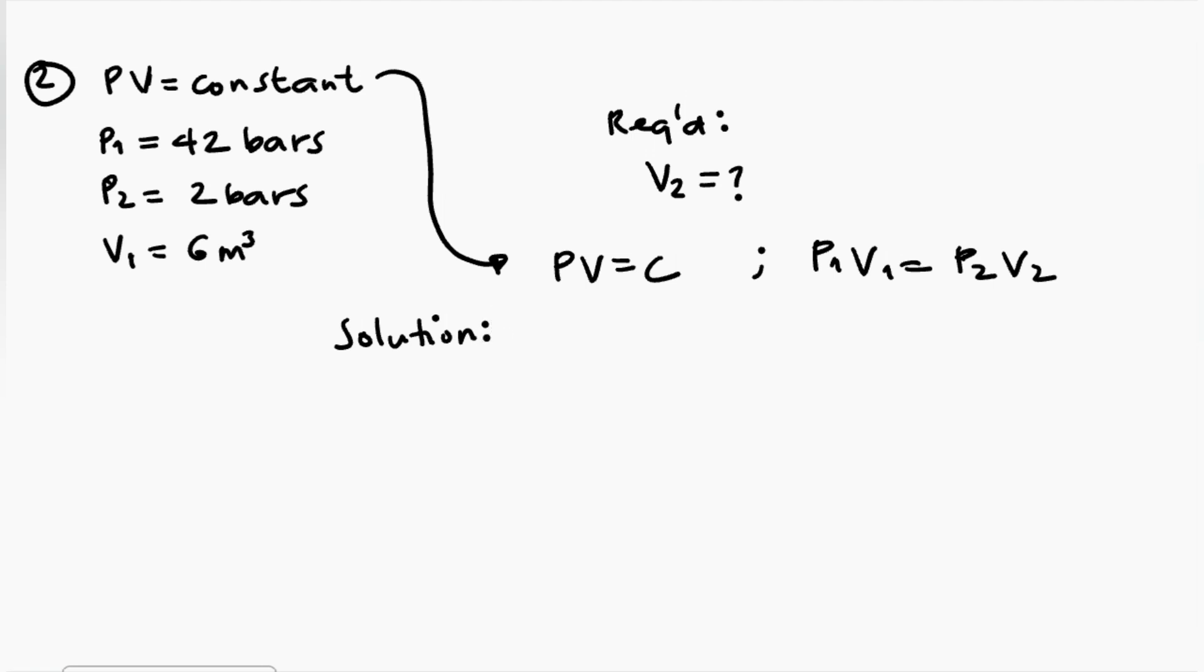First, we'll derive the final equation. From P1 V1 equals P2 V2, obtaining the equation for V sub 2, our final equation is P1 V1 over P2. That's the equation we'll use. What we'll do is substitute our given values. For V sub 2, the unit will be cubic meters, since V sub 1 is in cubic meters.